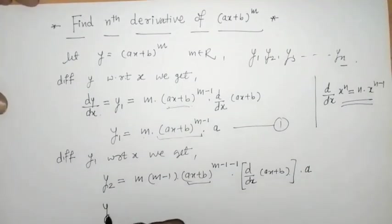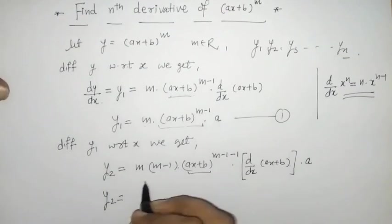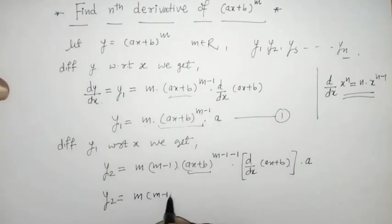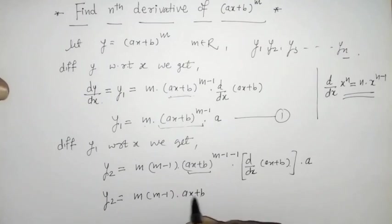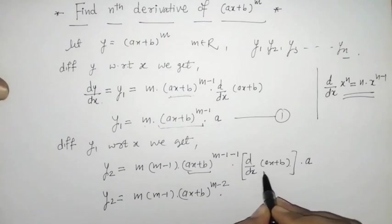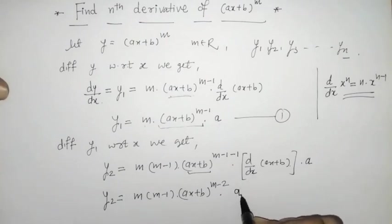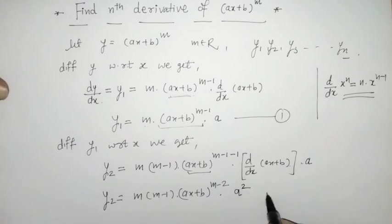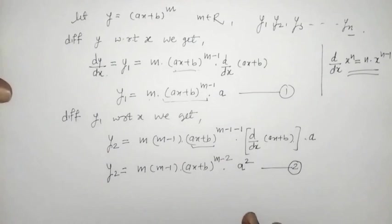On simplification, y2 equals m(m − 1) into (ax + b) raised to (m − 2), and the derivative of (ax + b) gives another factor of a, so we have a squared. This is the second derivative.